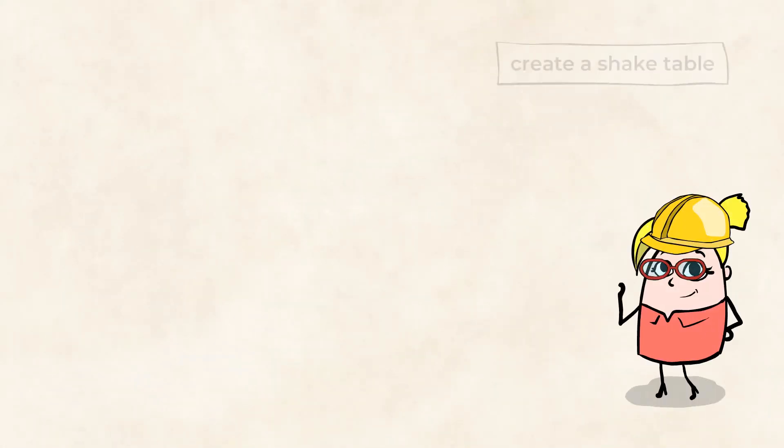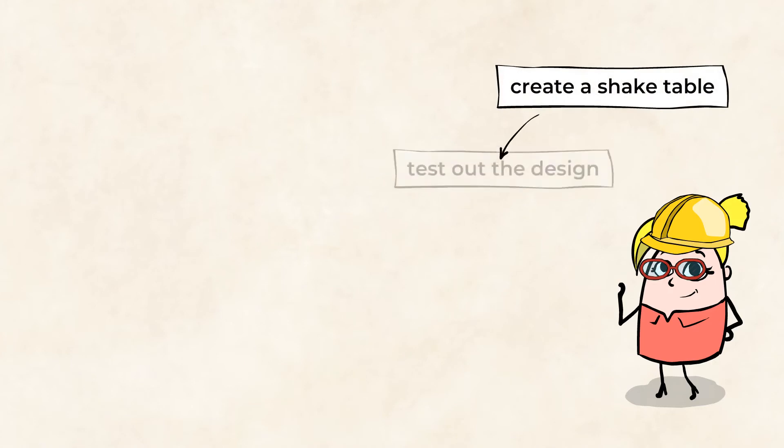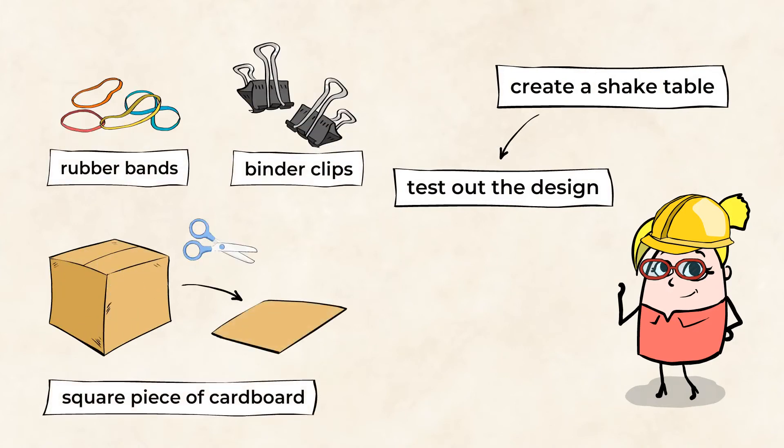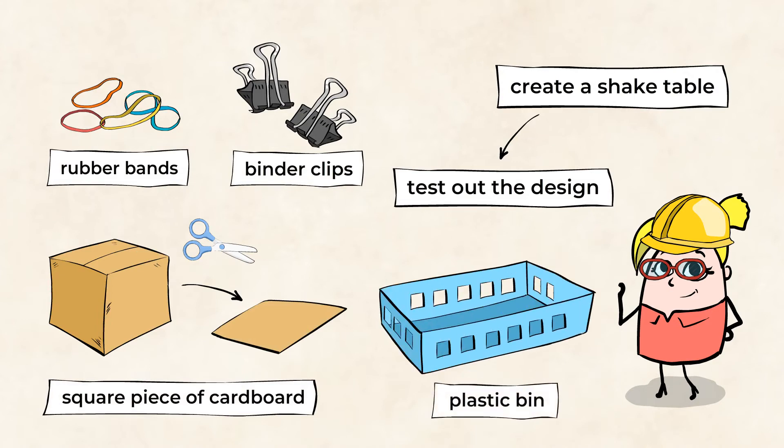This time, let's create a shake table to test out the design. Here's how to do it. Let's start by gathering rubber bands, binder clips, and a flat, square piece of cardboard. We'll also need a plastic bin, preferably one with holes in it, so that we can weave the rubber bands through them.